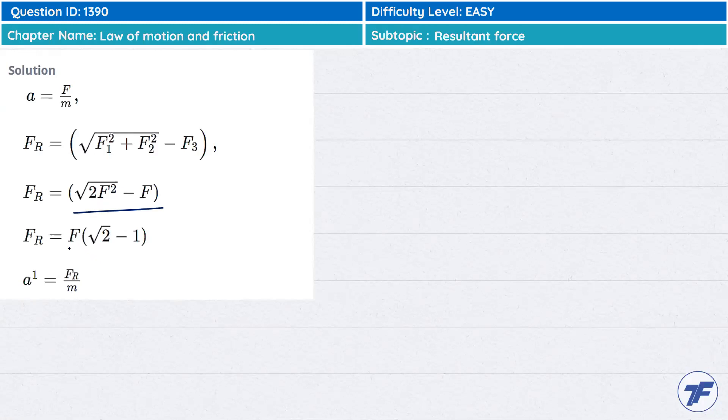The resultant FR is f√2 minus 1. So acceleration will be divided by mass, and we put the mass value here. So acceleration is FR, that is f√2 minus 1, and mass is f by a.